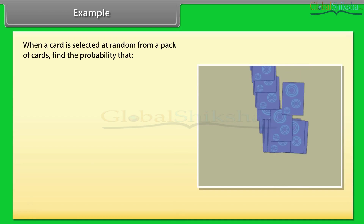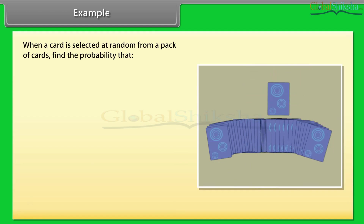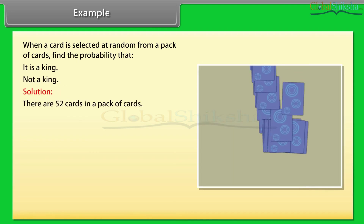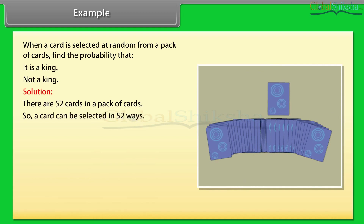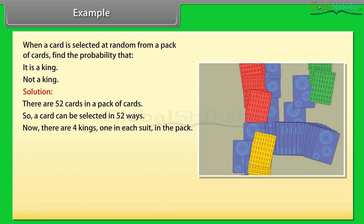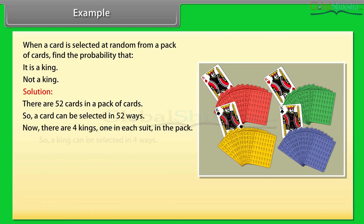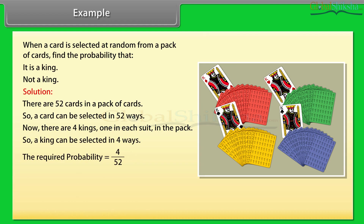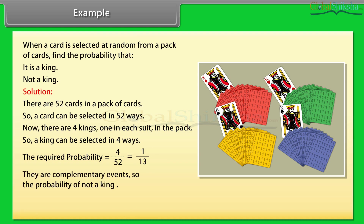When a card is selected at random from a pack of cards, find the probability that it is a king or not a king. Solution: there are 52 cards in the pack of cards, so a card can be selected in 52 ways. There are 4 kings, one in each suit, in the pack, so a king can be selected in 4 ways. The required probability is equal to 4 by 52, which equals 1 by 13. They are complementary events, so the probability of not a king is equal to 1 minus 1 upon 13, which equals 12 by 13.